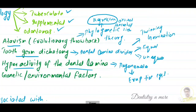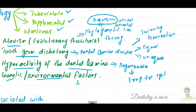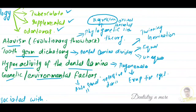The fourth theory concerns genetic and environmental factors. Supernumerary teeth are more commonly seen in relatives of affected patients. They can be transmitted as autosomal recessive, autosomal dominant, or X-linked forms of inheritance.